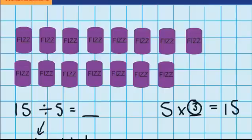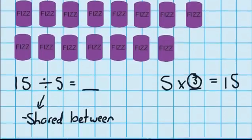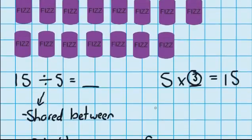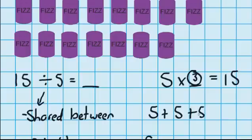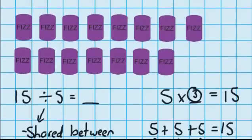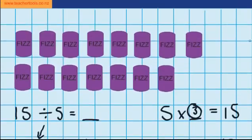If you weren't happy using multiplication, you could have used repeated addition. We could go: 1 group of 5 cans, plus another group of 5 cans — that means we've used up 10 cans — plus another group of 5 cans, which equals 15. And you can see that we've got 1 group, 2 groups, 3 groups. We'd better go back up here and use our materials and see if that does work.